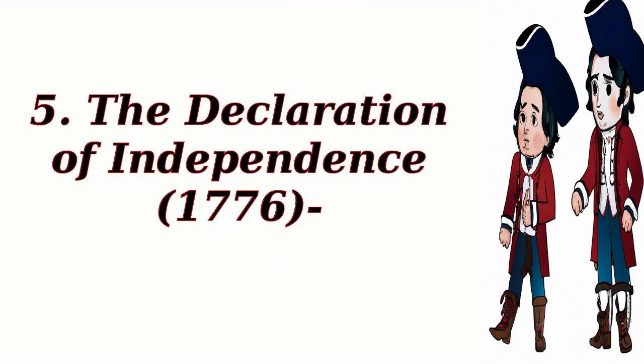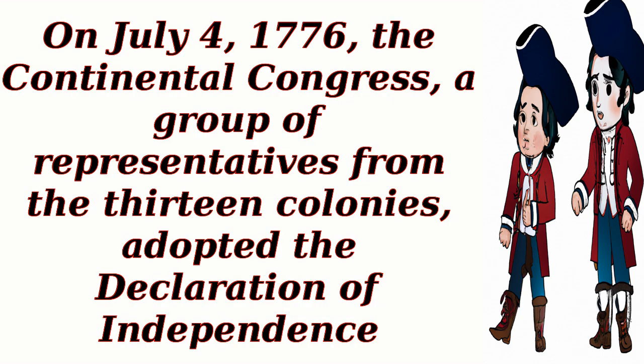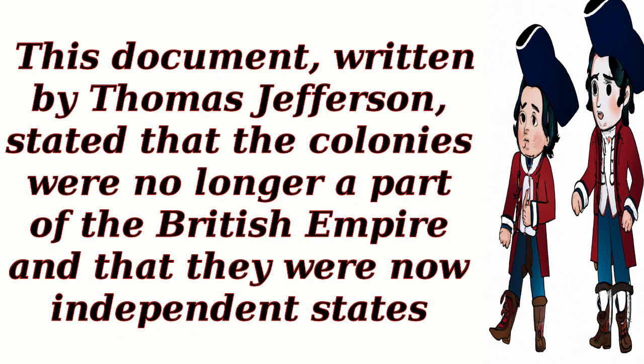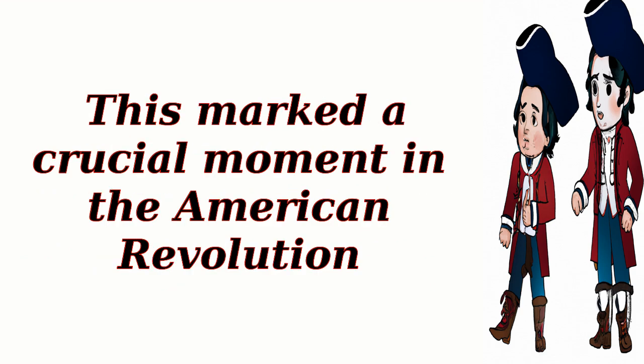5. The Declaration of Independence, 1776. On July 4, 1776, the Continental Congress, a group of representatives from the 13 colonies, adopted the Declaration of Independence. This document, written by Thomas Jefferson, stated that the colonies were no longer a part of the British Empire and that they were now independent states. This marked a crucial moment in the American Revolution.